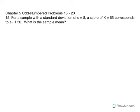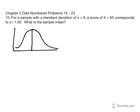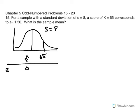What is the sample mean? We should begin with a visual interpretation of what we are provided. The mean in the center is the value we want to solve for. The distribution has a standard deviation — it's a sample, so s equals 8. A score of 65, if we consider the z-distribution, is 1.5 standard deviation units above the mean.